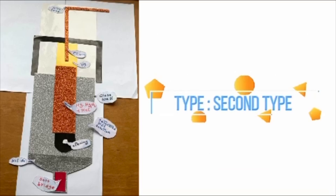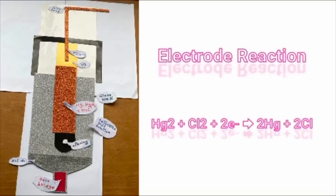Type: second type. Electrode reaction: Hg2Cl2 + 2e⁻ equals 2Hg + 2Cl⁻.